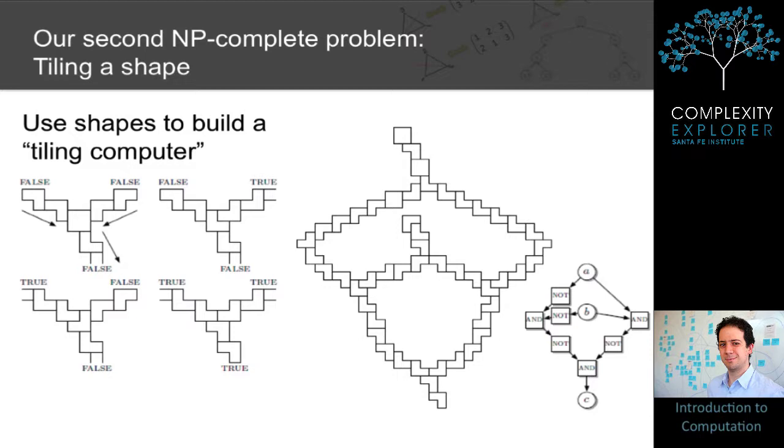We're going to use a sort of funny encoding of false and true here. On the inputs, we're going to use one encoding, and on the output, we're actually going to use the opposite encoding. On the inputs, we'll say an input is false if it consists of a single L-tile, like here, or true if it's covered by a pair of L-tiles, like here.